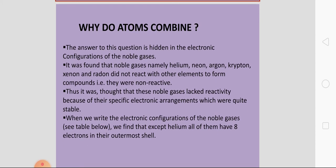The answer to this question is hidden in the electronic configuration of the noble gases. Noble gases, you know, are helium, neon, argon, krypton, xenon, and radon. And these are kept in group 18 in the periodic table.